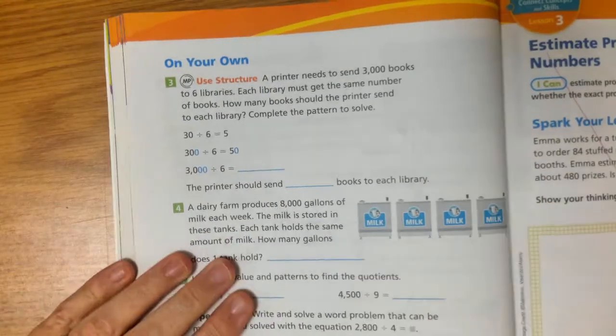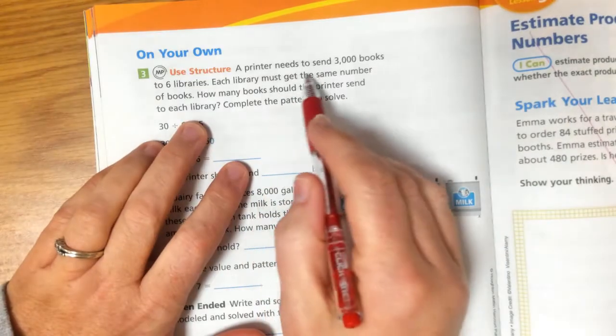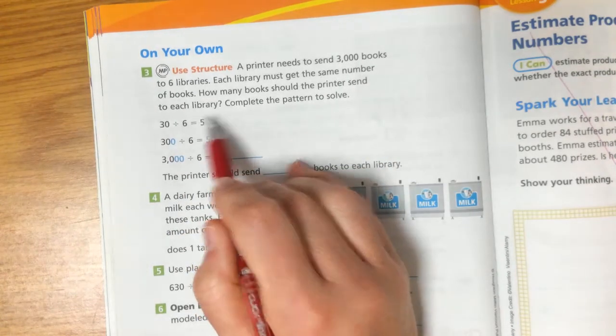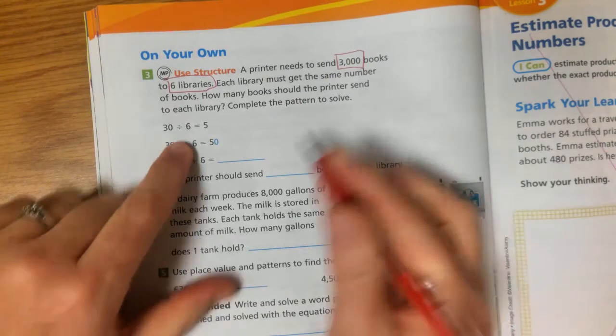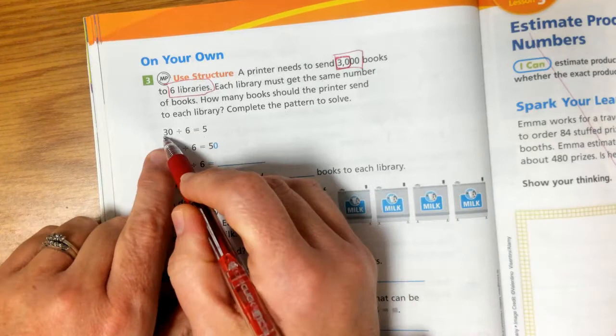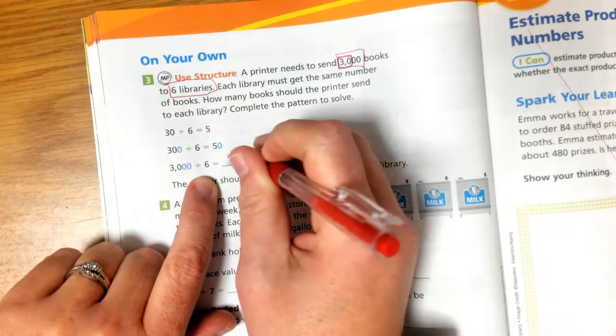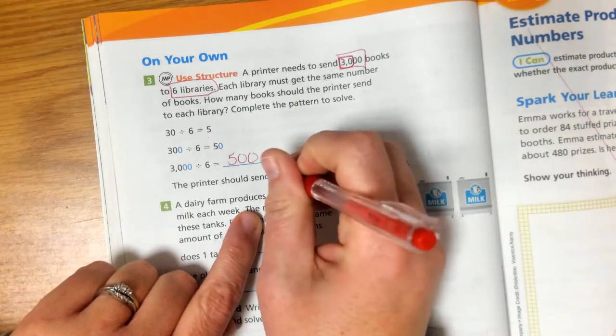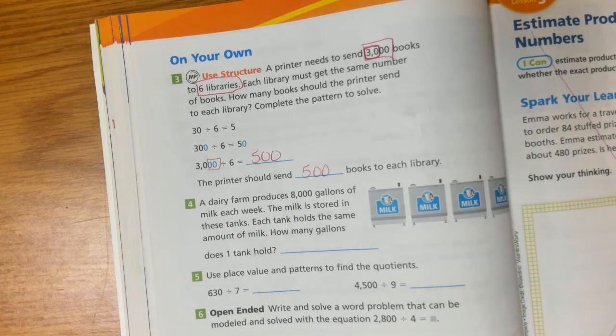So here we're on the on your own part. If you want to pause the video and do this independently, you can. And then come back and check your answers. Or you can stay right with me and do this together. A printer needs to send 3,000 books to six libraries. Each library must get the same number of books. How many books should the printer send to each library? Complete the pattern to solve. So the printer needs to send 3,000 books to six different libraries. So when I'm looking at the number 3,000, I know that 30 and six have something in common, and that's a 5. 30 divided by 6 equals 5. So then I've got my two extra zeros. So 3,000 divided by 6 would be 500, right? So we had 50, 500. So the printer should send 500 books to each library. I just need my two zeros added to the end of my 5 because 30 divided by 6 equals 5.